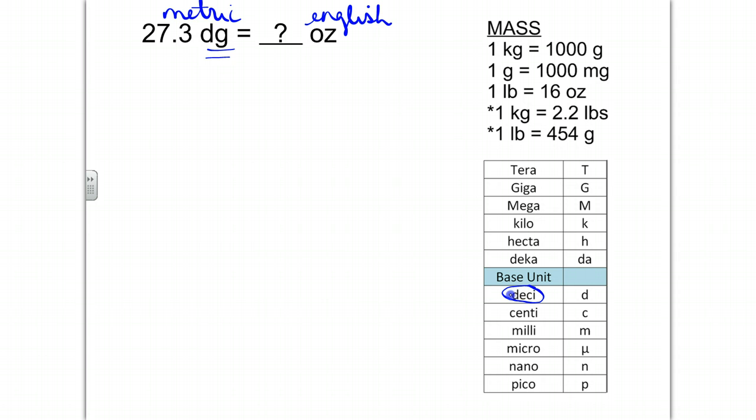When given a metric unit that's not the base unit, we want to get from that unit back to the base. So your first job here is going to be take your 27.3 decigrams, place it over 1, bring it down, and we need to get back to the base. The base of decigram is gram.